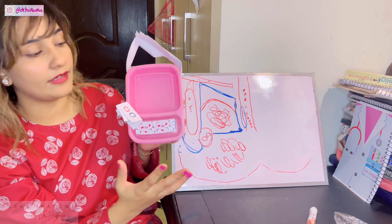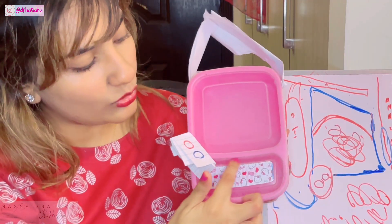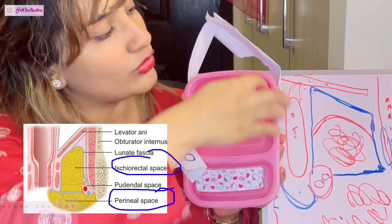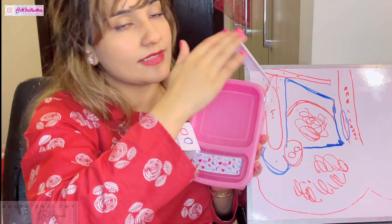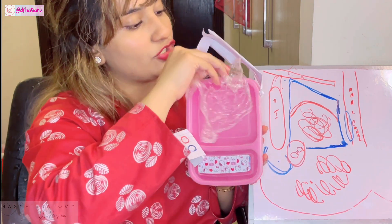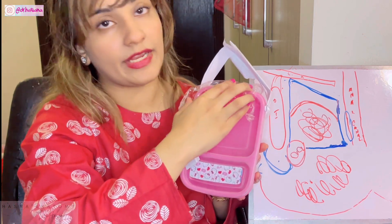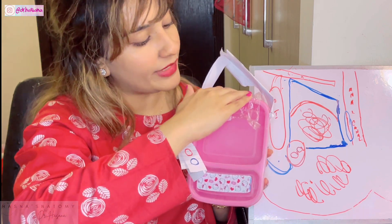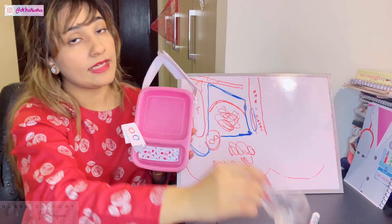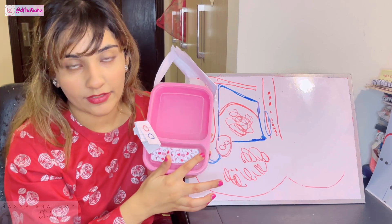Overall, the ischioanal fossa is divided into multiple areas. The first division is due to the perianal fascia into an upper larger space and a lower smaller space. The smaller space is known as the perianal space, while the entire upper part is known as the ischioanal space. The ischioanal space itself is also divided by the lunate fascia — which forms the roof — into a suprategmental and an intrategmental space.